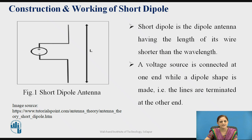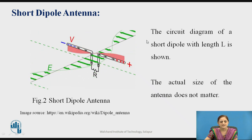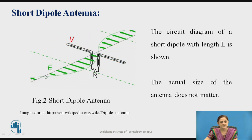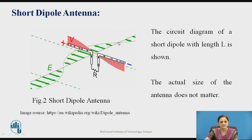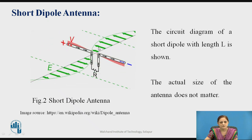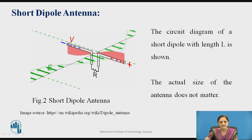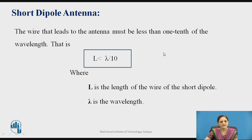A voltage source is connected at one end of the antenna while the dipole lines are terminated at the other end. The electromagnetic energy is radiated from the open end through free space. The wire must be less than one tenth of the wavelength — that is, length L is less than lambda divided by 10, where L is the length of the wire of the short dipole and lambda is the wavelength.